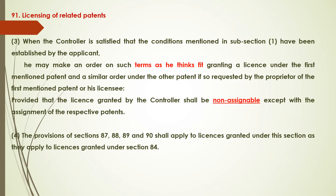Section 91, Subsection 3. When the controller is satisfied that the conditions mentioned under subsection 1 have been established by the applicant, he may make an order, with terms decided by him, for granting the license under the first mentioned patent. A similar order may be made under the other patent if the proprietor of the first mentioned patent or licensee desires, provided the license granted by the controller shall be non-assignable except where another assignment exists. Subsection 4: The provisions of sections 87, 88, 89 and 90, applicable for licenses granted under section 84, are similarly applicable under section 91.